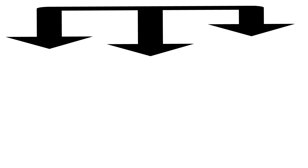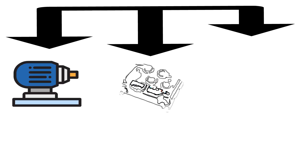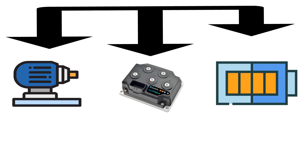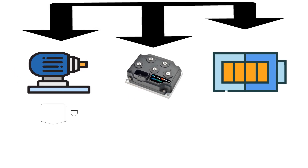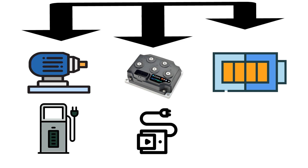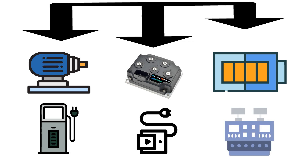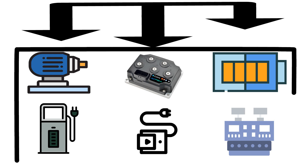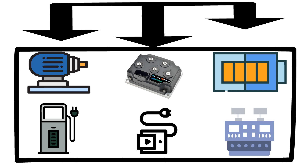There are three main systems in electric vehicles which play a very significant role: the motor, motor controller, and battery pack. Apart from these, we have the electric vehicle charger, battery management system, and auxiliary systems for driving control units. We'll see the significance of each of these systems one by one.